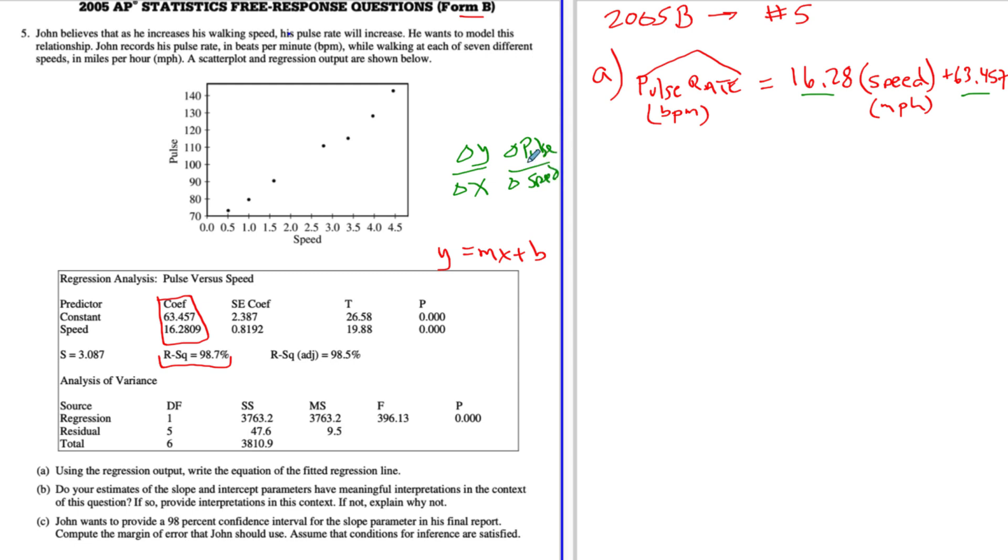So it means like if I want to write this out as 16.28, I can write that as a fraction like this over one, which means that the pulse rate increases 16.28 beats per minute for every one mile per hour increase in our speed. So let me write that out. So writing that out for your benefit, I'll type it out. The slope represents a 16.28 increase in pulse rate for every increase of one mile per hour in speed.